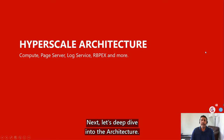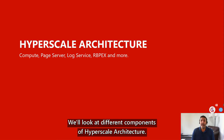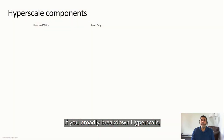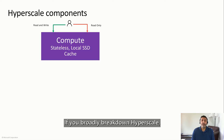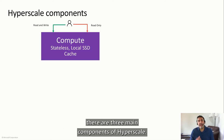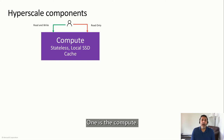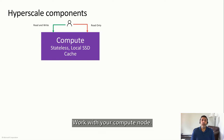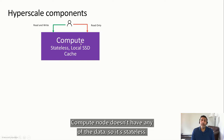Let's deep dive into the architecture and look at different components of the Hyperscale architecture. There are three main components of Hyperscale. One is the compute — all interaction of users, whether it's read-write workloads or read-only access to replicas, works with your compute node. The compute node doesn't have any of the data, so it's stateless. It has a local SSD cache.